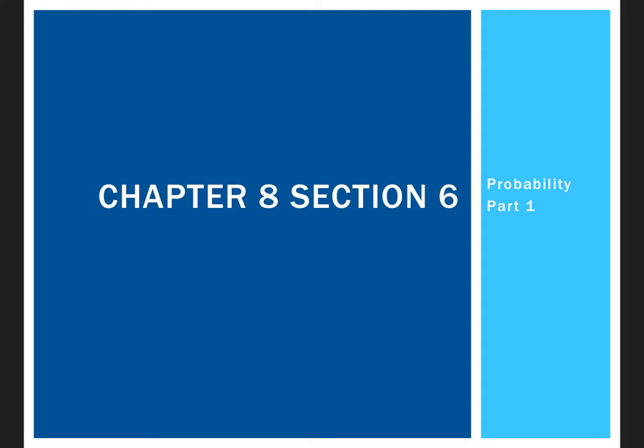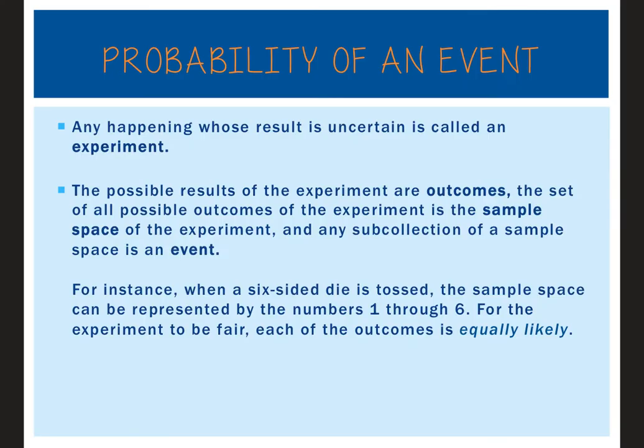Now we're going to move into chapter 6 — probability. This takes what we just did, figuring out the number of ways things can happen, and goes one step further: figuring out how to determine the probability of one or multiple outcomes occurring. The probability of an event has a bunch of different vocabulary terms, which is where we're going to start.